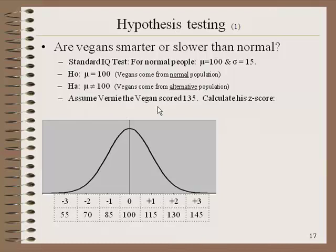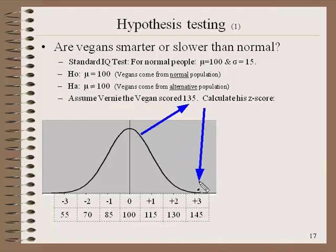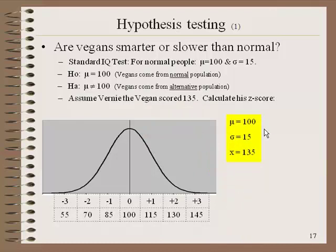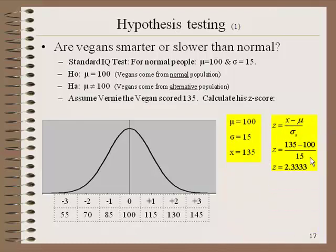Let's assume that Vernie the vegan scored 135. There's a score of 135, and what we want to determine is where that falls in the distribution — how extreme is that score of 135? We take our information: 100 is the mean, 15 is the standard deviation, and the score is 135. That gives us the following Z-score calculation: we plug in the score, the mean, and the standard deviation, and that gives us a Z-score of 2.33 repeating.